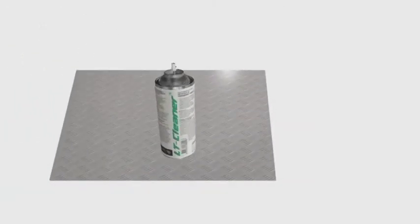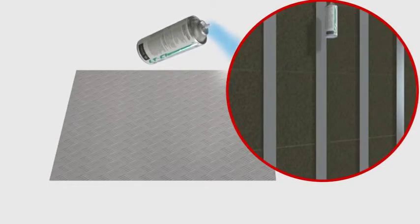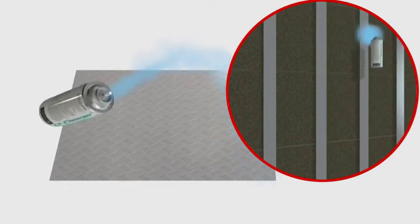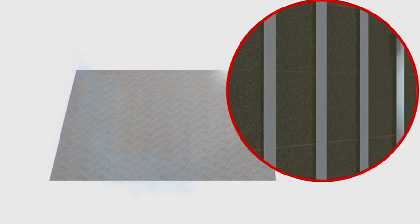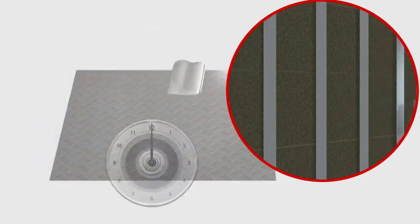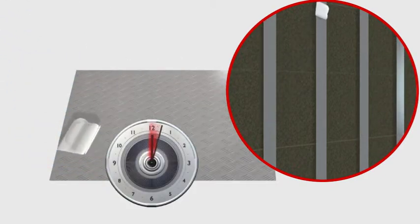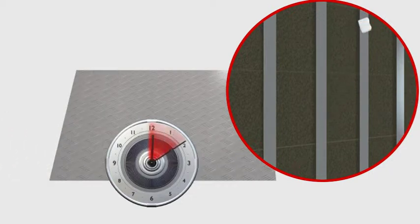Spray the back of the facade panel and the supporting wall structure, then wipe off in one direction with paper or a clean cloth. After which, allow the LT cleaner to thoroughly evaporate for 5 to 10 minutes.